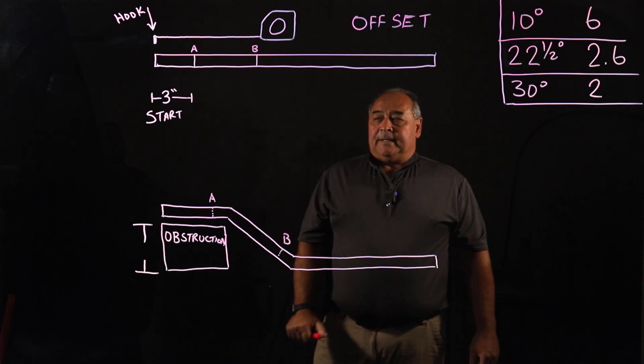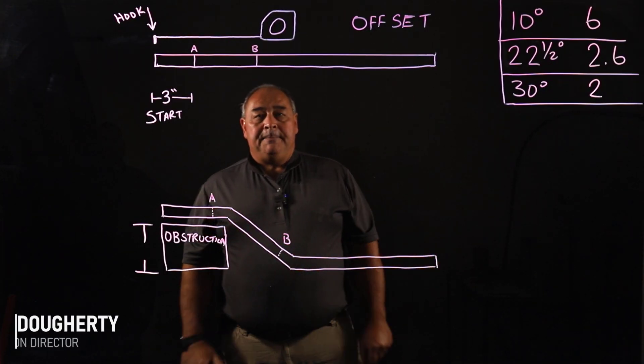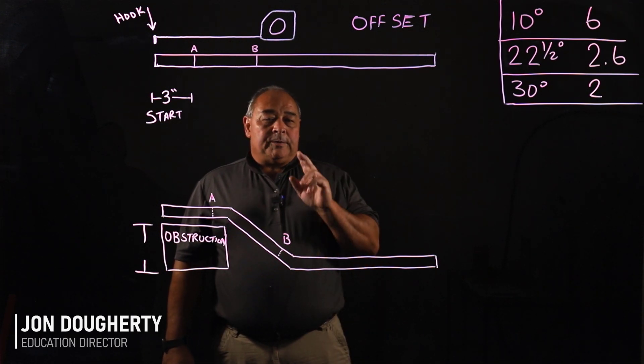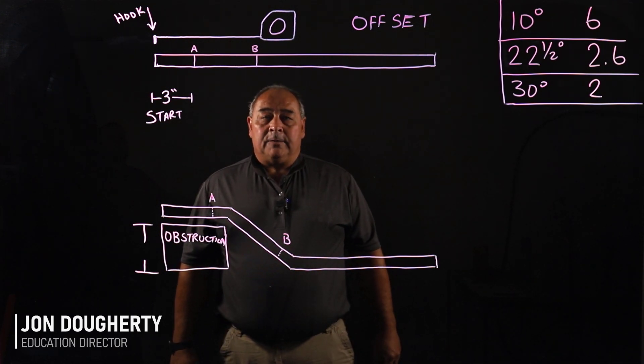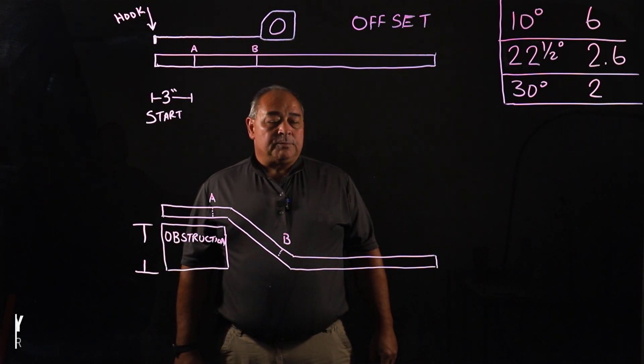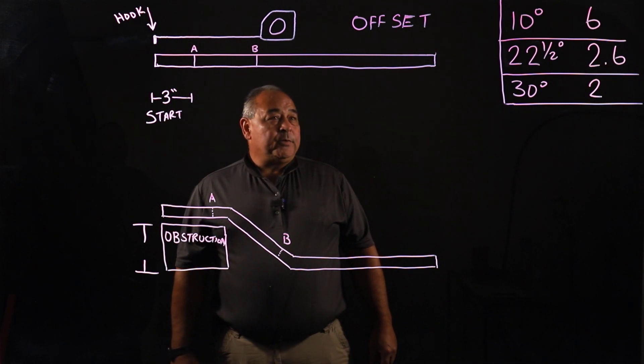On this we're going to talk about an offset. Taking a straight piece of pipe and we have to put two marks on that pipe. Now in order to figure out where those marks go, we've got a couple things to think about.